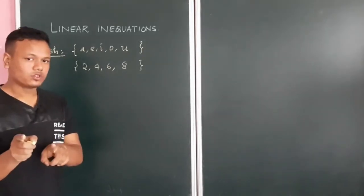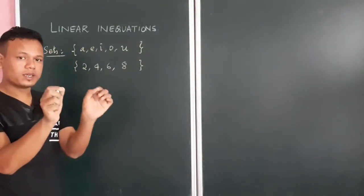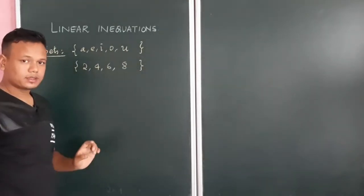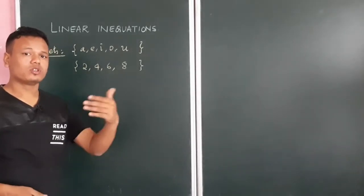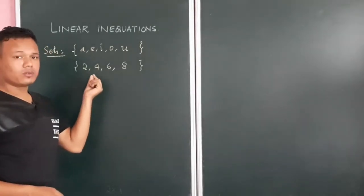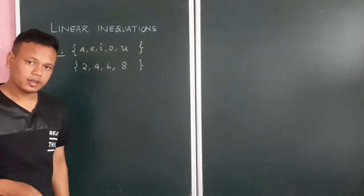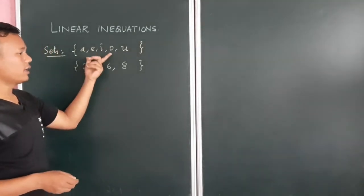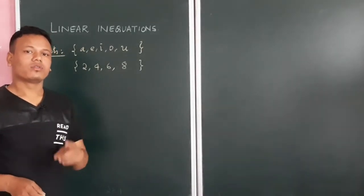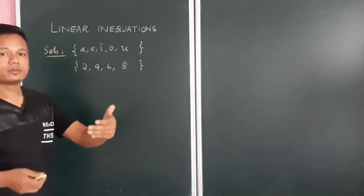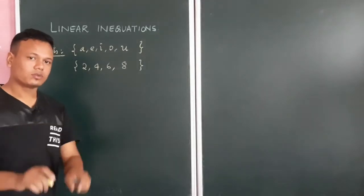So have you understood sets? Sets means it is a group, and that group has to be kept inside a curly bracket. They also have to be well-defined. For example, I defined it as a natural number that is also an even number. Similarly, I did not just say set of alphabets — I said set of vowels. That is what makes it well-defined. So this is all about sets.